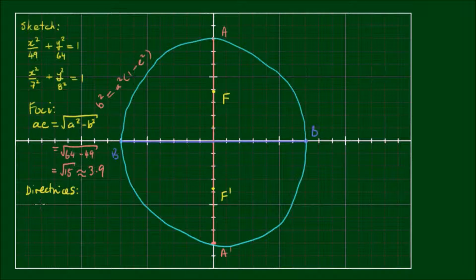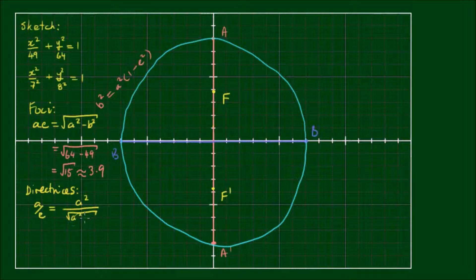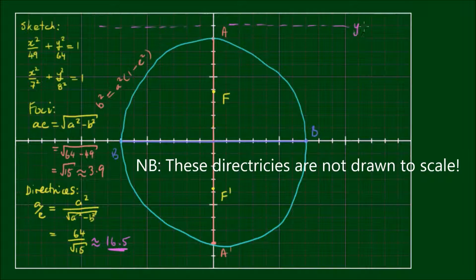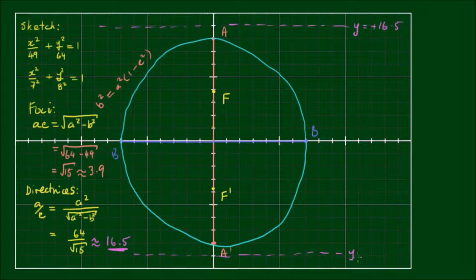The directrices are located at a distance of a over e above and below the center point. And a over e is given by a squared divided by the square root of a squared minus b squared. So this means we have 64 over the square root of 15, which is approximately equal to 16.5. This value won't fit on our graph, but if we represent the directrix as a dashed line, we can say this is at y equals positive 16.5, and the opposite directrix is at y equals negative 16.5. So this is directrix d and directrix d prime.